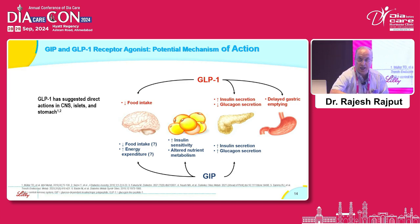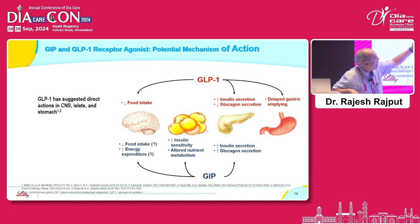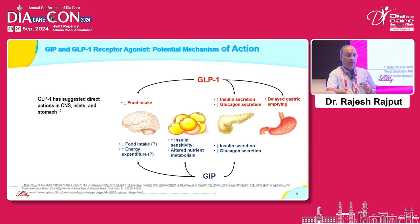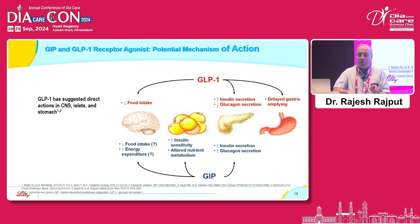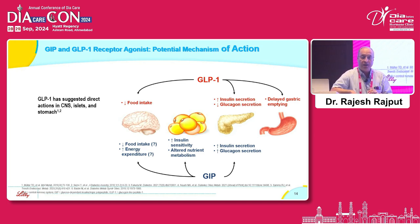What are the similarities? GIP also acts on pancreatic beta cells to cause glucose-dependent insulin secretion. But in contrast to GLP-1, GIP stimulates glucagon secretion. Some may be confused — over the last 15 years we have been taught that glucagon levels should be suppressed, and now we are discussing a drug that increases glucagon secretion. The answer is that the effect of GIP on glucagon is bidirectional.